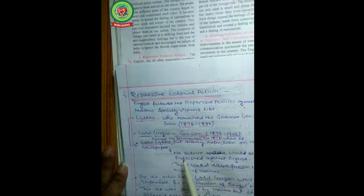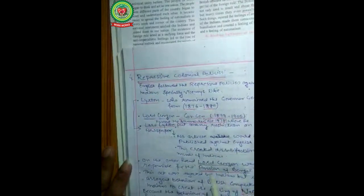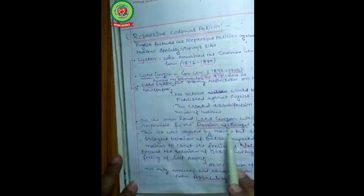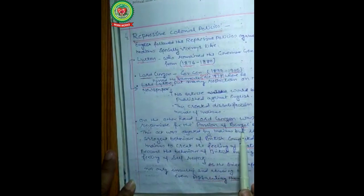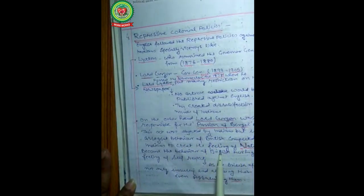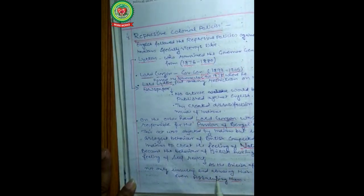Under the Vernacular Press Act, Lord Lytton put many restrictions on newspapers, stating that no article would be published against the English. This created a feeling of dissatisfaction in the minds of Indians. On the other hand, Lord Curzon was responsible for the Partition of Bengal in 1905, which was also objected to by the Indians. The arrogant behavior of the British — insulting, abusing, and even assaulting Indians — compelled Indians to develop a feeling of nationalism.